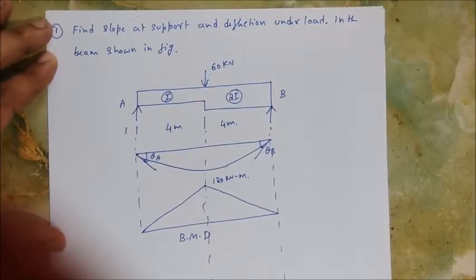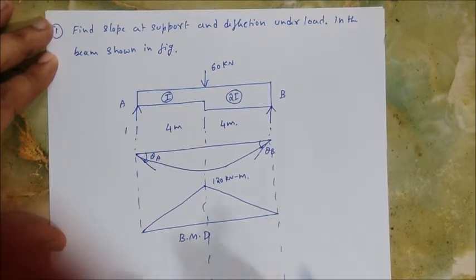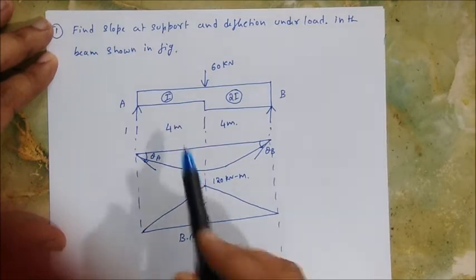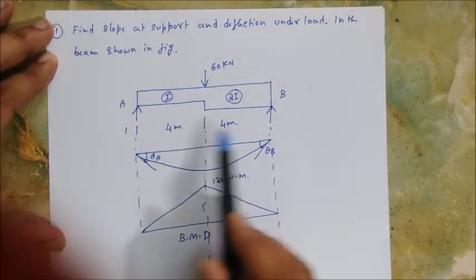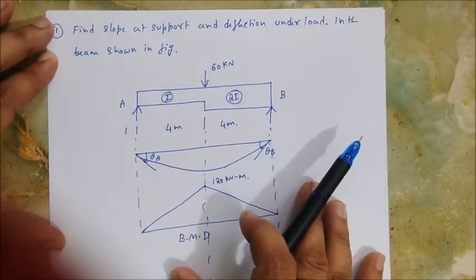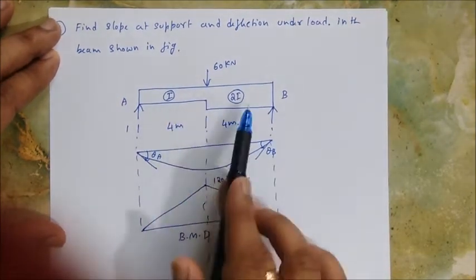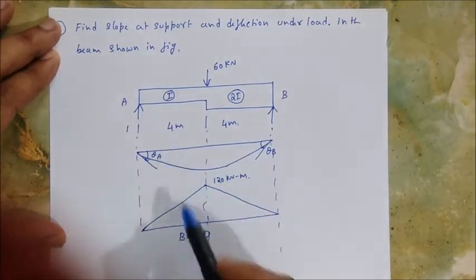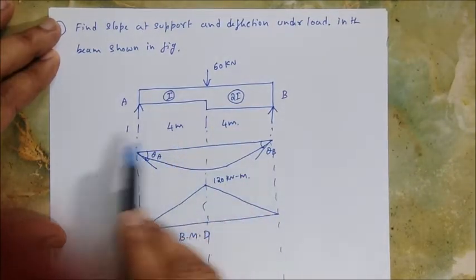Let's solve problems on simply supported beam using the conjugate beam theorem. We'll take this problem where the I values are changing. We'll take E as constant but the I values are changing.